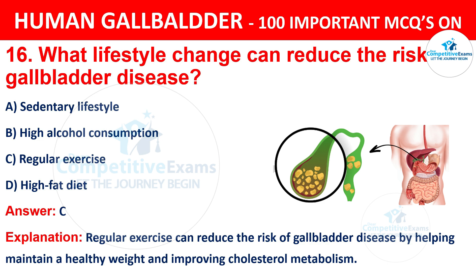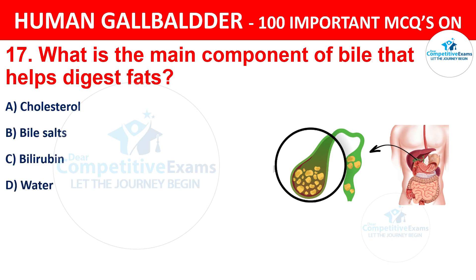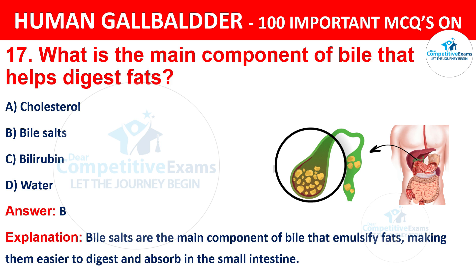Question 17: What is the main component of bile that helps digest fats? The correct answer is B, i.e. bile salts. Bile salts are the main component of bile that emulsify fats, making them easier to digest and absorb in the small intestine.